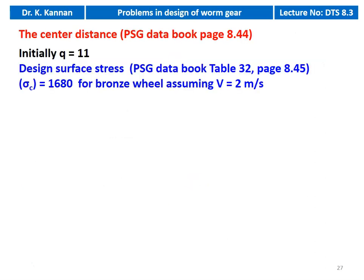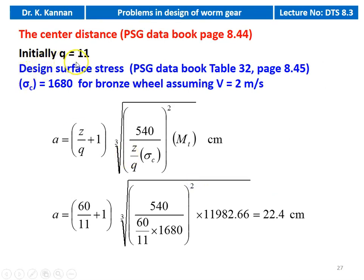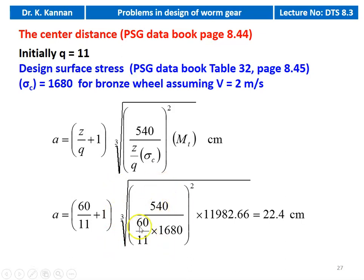We calculate the center distance. We assume Q equal to 11. The design surface stress from the PSG data book, table number 32, page number 8.45, sigma_c equal to 1680 for bronze wheel, assuming sliding velocity V equal to 2 m/s. The equation is A = (Z/Q + 1) × cube root of [540 / (Z/Q × sigma_c)² × MT_design]. Substituting: A = (60/11 + 1) × cube root of [540 / (60/11 × 1680)² × 11,982.66] = 22.4 cm.